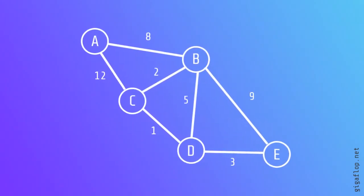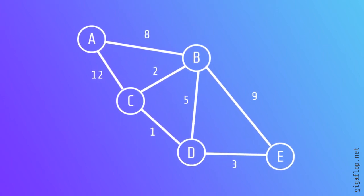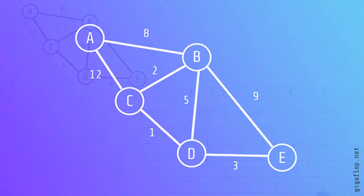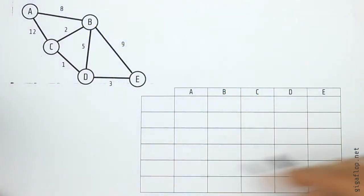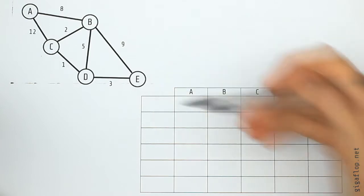So here's a network with five nodes: A, B, C, D, E. It's a weighted network and that means we can perform Dijkstra's algorithm on it. And in this video I'm going to show you that on a table. So we're going to apply the algorithm starting at A and finishing at E.